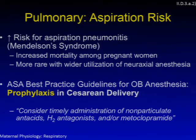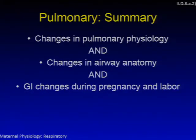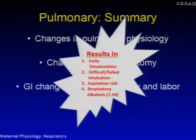As a result, the ASA best practice guidelines advocate for timely administration of nonparticulate antacids, H2 antagonists, and/or metoclopamide, particularly before cesarean delivery. In summary, pulmonary changes during pregnancy encompass changes in pulmonary physiology, airway anatomy, and GI changes during pregnancy and labor — all resulting in early desaturation, difficult or failed intubation, aspiration risks, and a respiratory alkalosis, where a baseline ABG pH would be about 7.44.